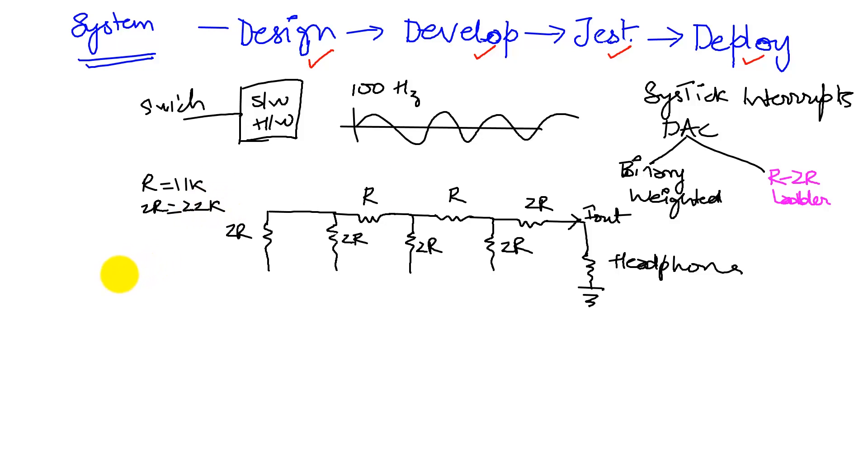So the way we're gonna connect this to our microcontroller is, we have our three bits. This is bit 2, bit 1, bit 0, and we connect this to our bit 0, this to our bit 1, and this to our bit 2, and we connect this to the ground.